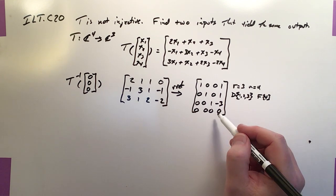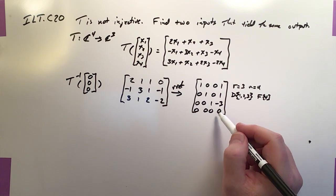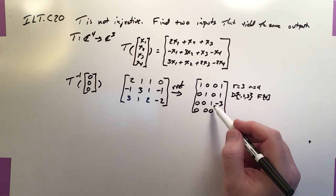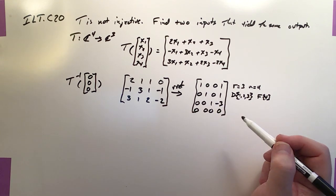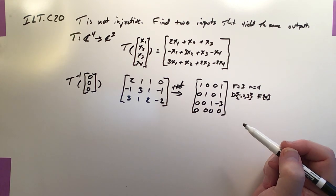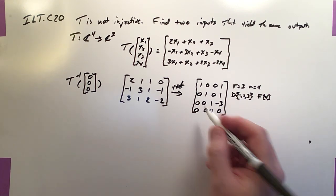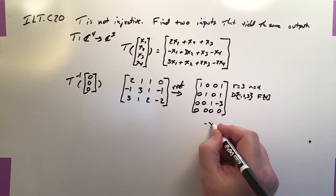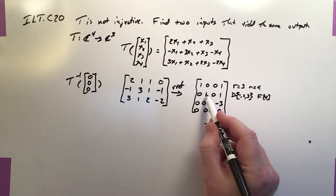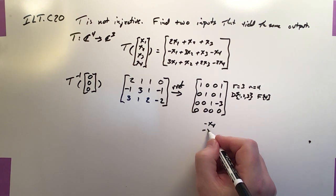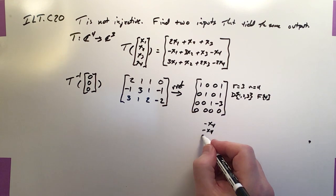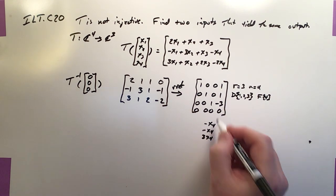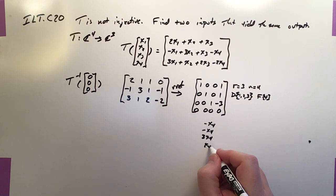So basically that means X4 is going to be free. But X1, 2, and 3 are all based on a function of X4. So let's build that. X4 is free. But X1 is going to be negative X4. X2 is going to be negative X4. X3 is going to be 3X4. And of course, X4 is itself X4.